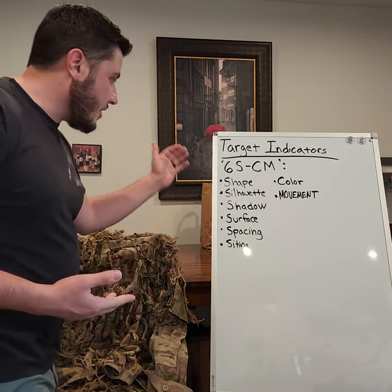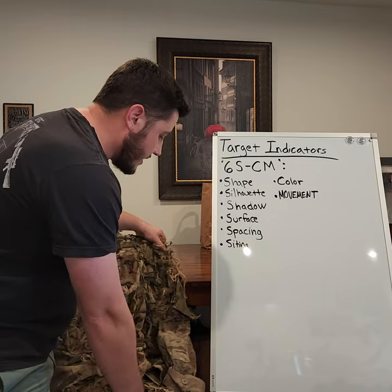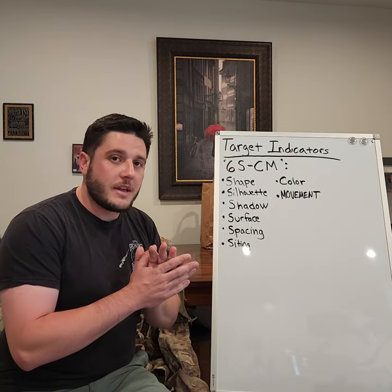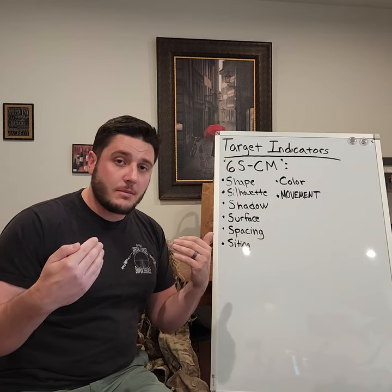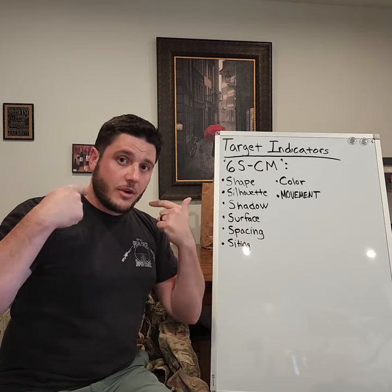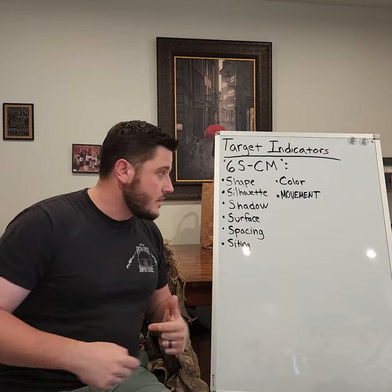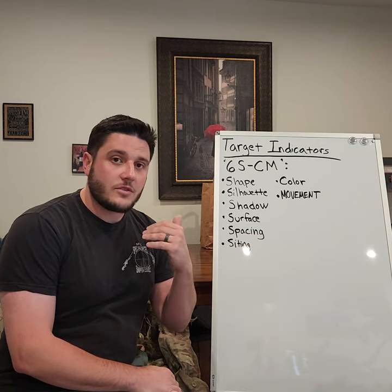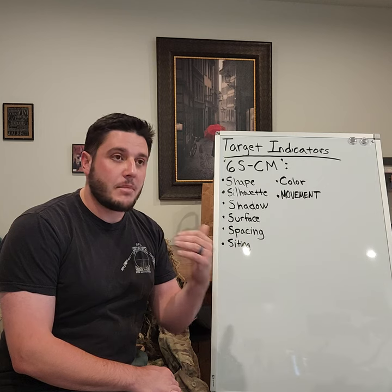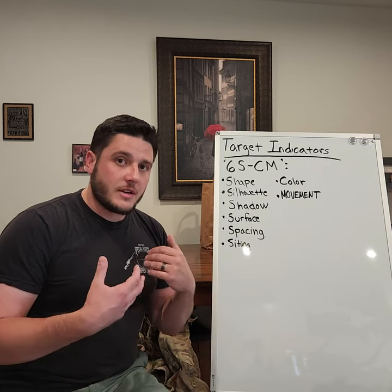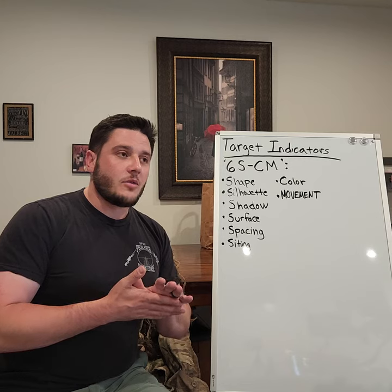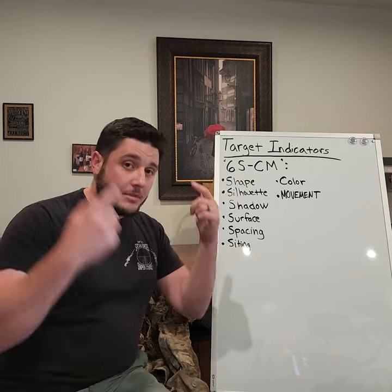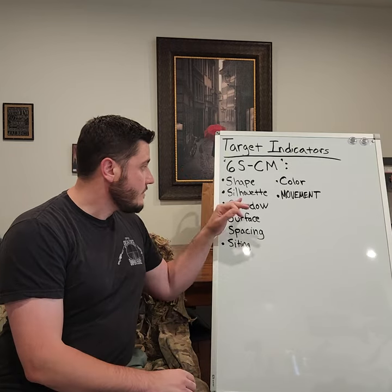A little more on target indicators before we go further into the ghillie suit. Shape is pretty self-explanatory. However, the big one for humans is the bowling pin — your head coming into your shoulders and then moving down the rest of your body. Humans have a telltale shape. Because we are predators, we are good at picking up the things that are the largest threat to us, which is other humans. Part of camouflage is breaking up the shape of that bowling pin.